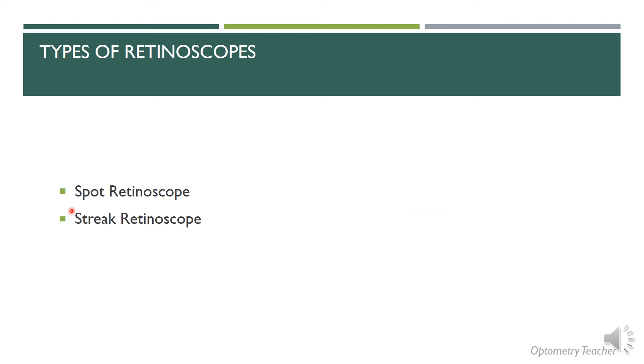We generally have two types of retinoscopes — one is the spot retinoscope and another is the streak retinoscope. We'll quickly go through both.